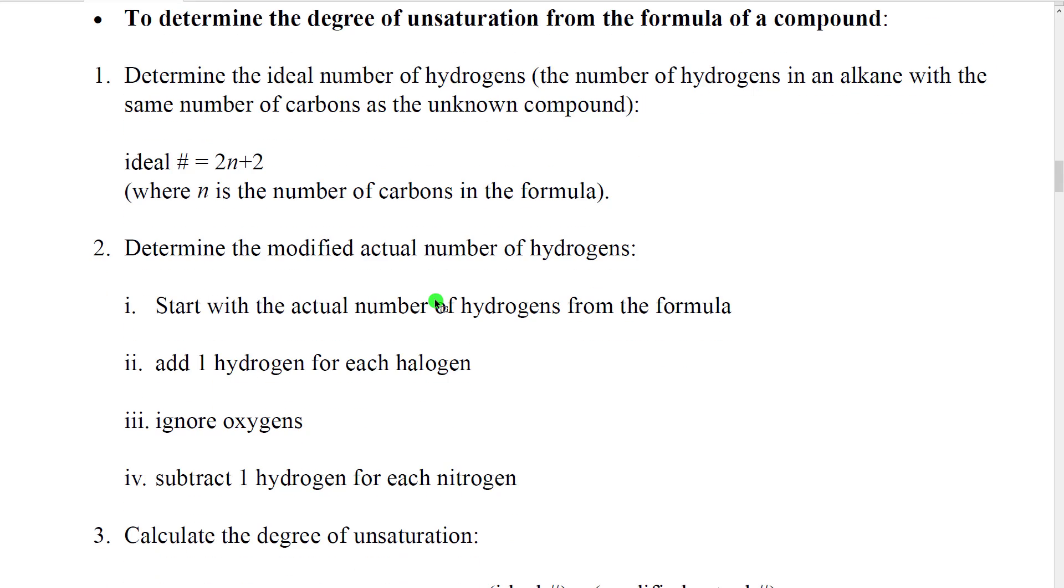If we had an unknown structure, we could try to determine the degree of unsaturation using its formula. To do so, there's basically three parts. First, what we're going to do is determine what, for lack of a better name, we call the ideal number of hydrogens, which is basically just, if I had an alkane with the same number of carbons, how many hydrogens would that have in it if there were no rings or unsaturations? So the ideal number is equal to 2 times n plus 2, where n is the number of carbons in the formula. So 4 carbons, 2 times n plus 2, 10 hydrogens ideally, etc.